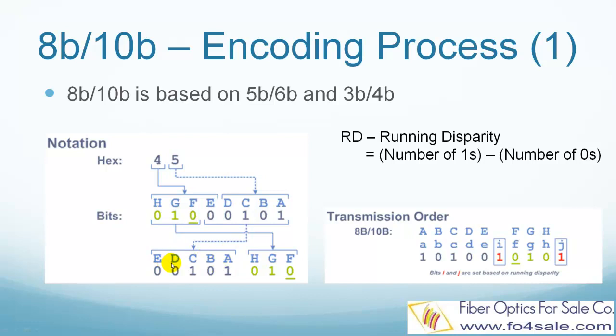ABCDE is moved to the front and FGH is moved to the back. Then comes the 8B10B coding process as shown in the right side picture. An I-bit joins the 5-bit ABCDE group and a J-bit joins the FGH group. Here we have to understand the concept of running disparity. Running disparity means the difference between the number of 1 bits and the number of 0 bits in the data. The value of I-bit and J-bit is set on the fly depending on the current running disparity. We will see clearly how this works in the next slide.